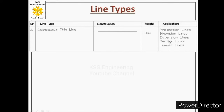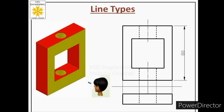Let us look at the applications. First, projection lines — the front view and top view of an object are shown. Between these two views, a few lines are drawn called projection lines. Their purpose is to transfer the projection of all points of the front view, which in turn helps us draw the top view. Whenever we draw projection lines, we use continuous thin lines.